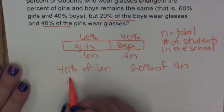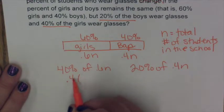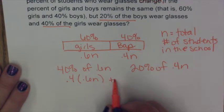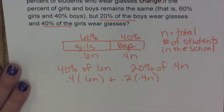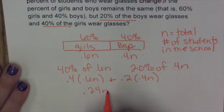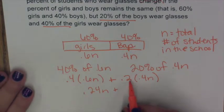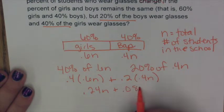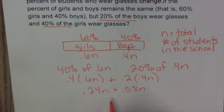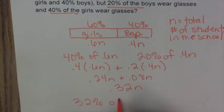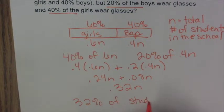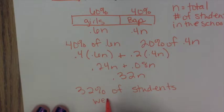So 40% means 0.4 times 0.6n, plus 0.2 times 0.4n. When I multiply 0.4 times 0.6, I get 0.24n. And when we combine those together, we get 0.32n, which means 32% of students wear glasses.